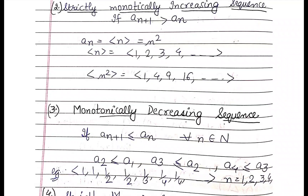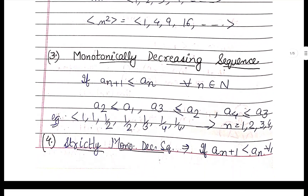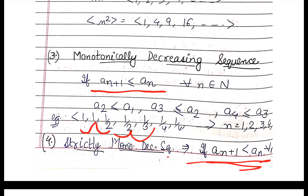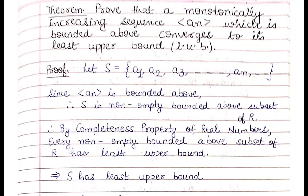For strictly monotonically increasing, the next term must be strictly greater — like 1, 2, 3, 4 or the sequence n-squared: 1, 4, 9, 16, and so on. Monotonically decreasing is just the opposite of increasing — the next term must be less than or equal to the current term. For strictly decreasing, the next term must be strictly smaller.